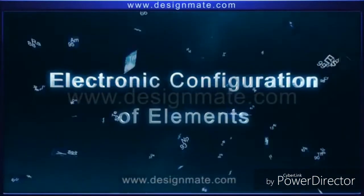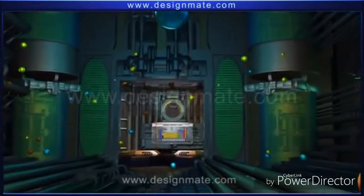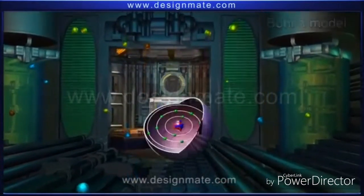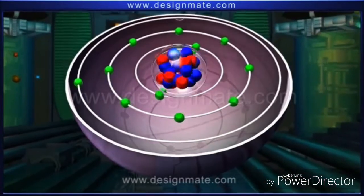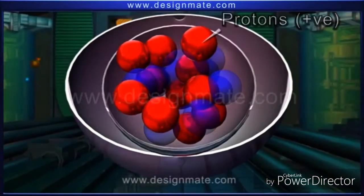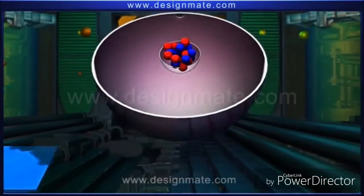Let's review together the electronic configuration of elements so we can know the location of elements of groups A in the modern periodic table. The atom consists of a nucleus and electrons revolving around the nucleus.